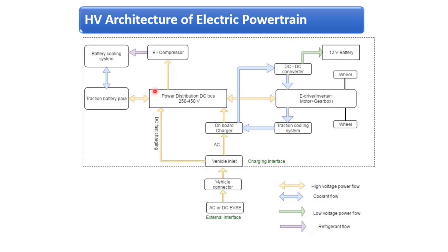The power distribution box receives power from the battery pack. Energy flows from the battery pack to the power distribution unit, and from the power distribution unit the energy goes to the e-drive.